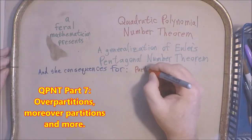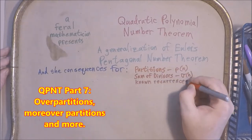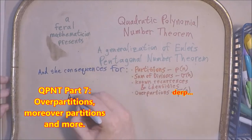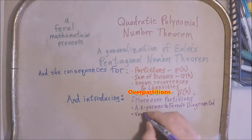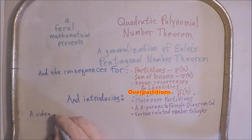This is called Quadratic Polynomial Number Theorem and it is a generalization of Euler's pentagonal number theorem. And we'll see what that means for known results and we'll look at some new things too.